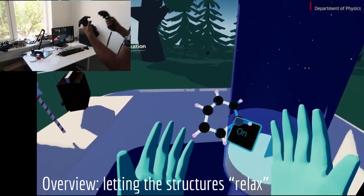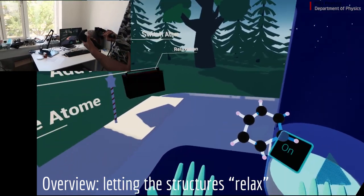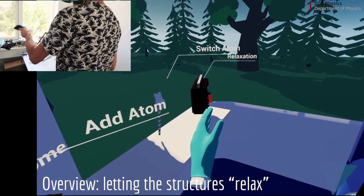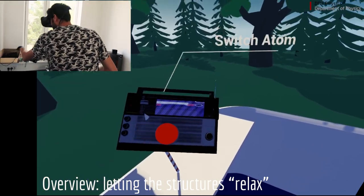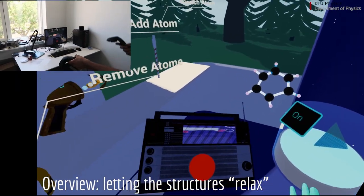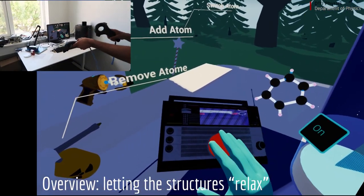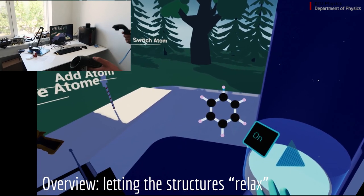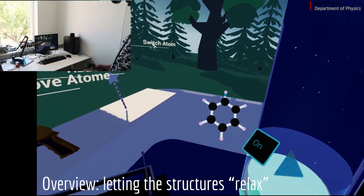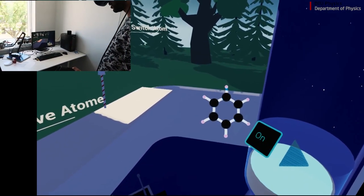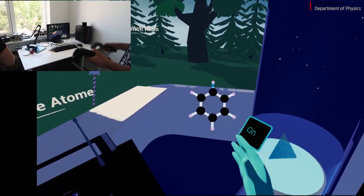So what if we wanted to make transport calculations? Then that wouldn't mean anything, because this thing would never appear in life. So what I can do, I can just grab the relaxation tool, which is an old-school radio, because who doesn't like to relax with a bit of music. And I can ask for relaxation, which is going to minimize the energy of this structure. And now you get a nice graphene cycle, the honeycomb.